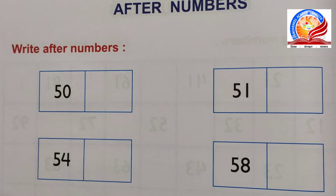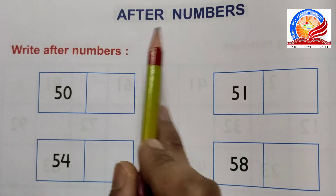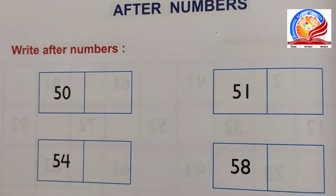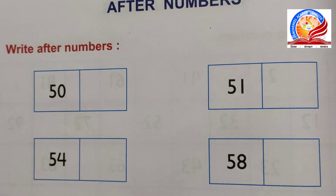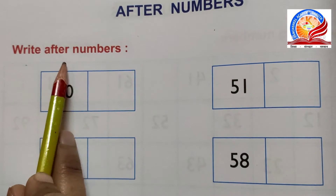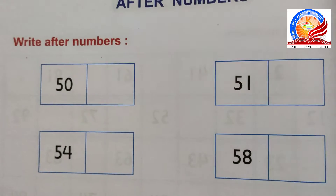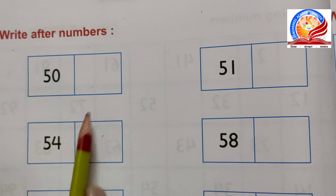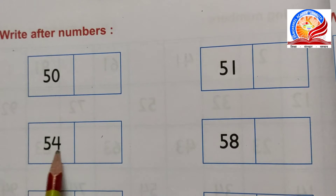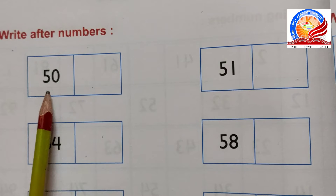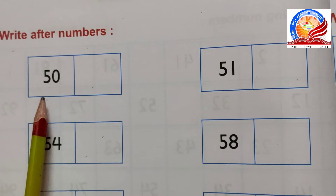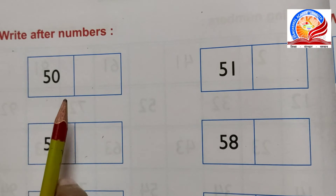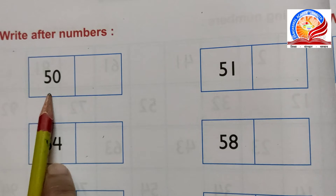Next, come to page number 24 - After Numbers. After matlab hota hai 'baad mein'. Yeh hum pehle bhi padh chuke hain. Right after numbers - humein yahan par kuch numbers aur unke saath blank boxes diye gaye hain. Humein inke baad mein aane wala number fill up karna hai. Jaise humein yahan par 50 diya gaya hai - which number comes just after 50?